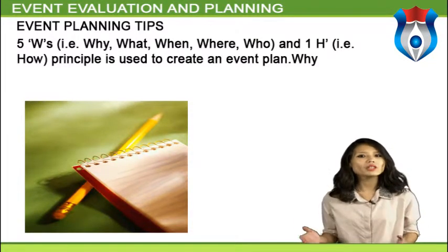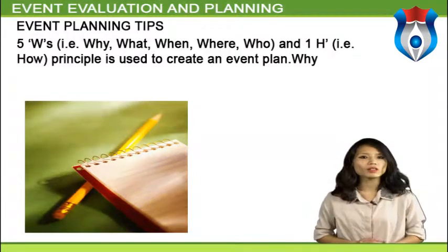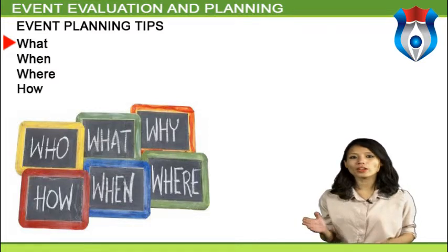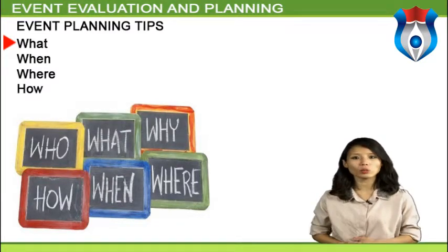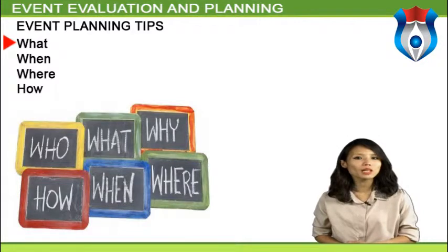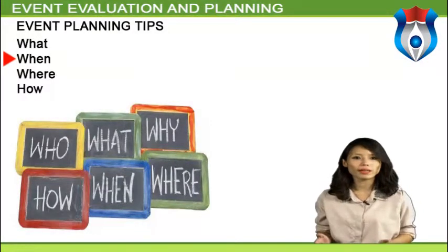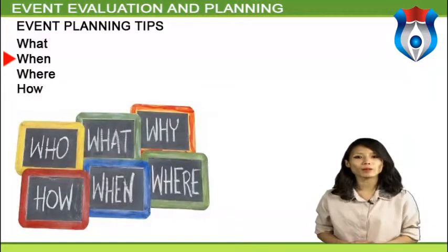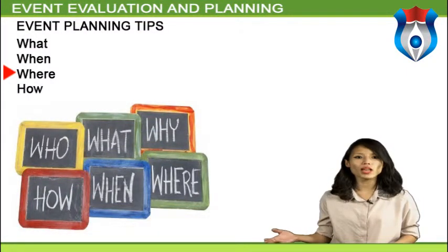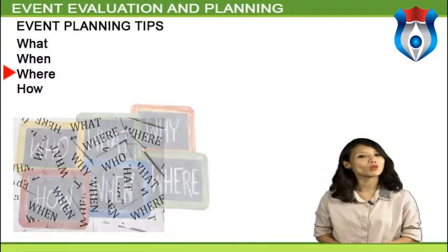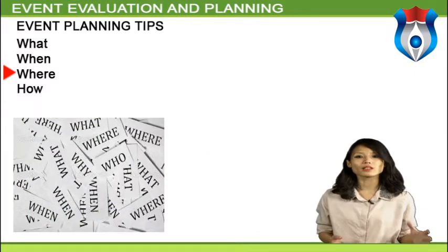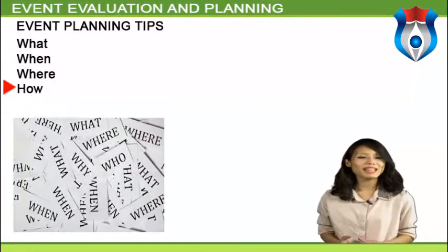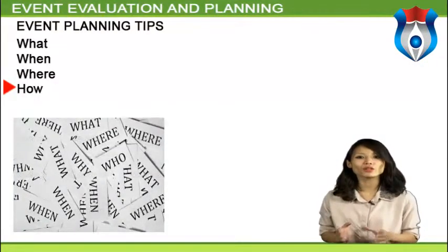Why means the event objective — why someone wants to organize the event. What refers to what will be done in the event — what the event name will be. When refers to the date and time of the event. Where refers to the venue. Who refers to the organizer, sponsor, partners, clients, and target audience. How refers to how the event will be marketed and produced.